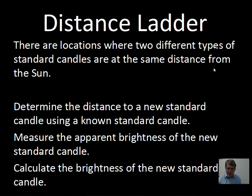We're going to simplify things a little bit. There are places in the universe where there are two different types of standard candles — for example, Cepheid stars and Type 1a supernovae in the same galaxy. That gives an opportunity for one known standard candle to calibrate the new one. We use the known standard candle, measure its apparent brightness, know its true brightness, and calculate the distance. Astronomers then measure the apparent brightness of the new standard candle.